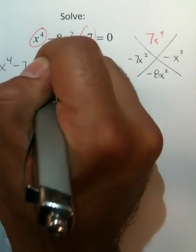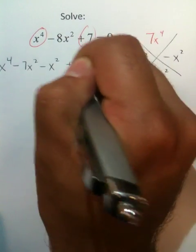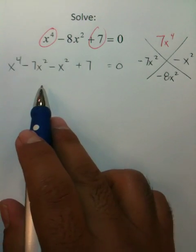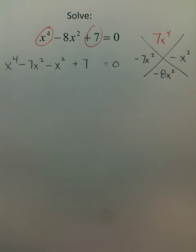4x squared minus 7x minus x squared plus 7 equals 0. This is what your problem looks like after you rewrote it using the guess and check method.